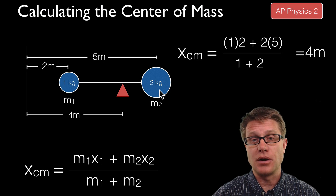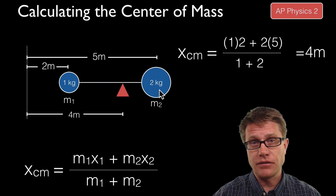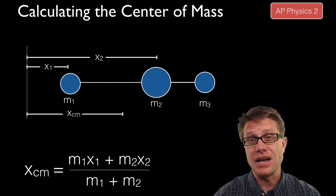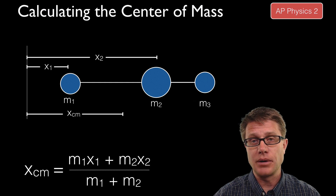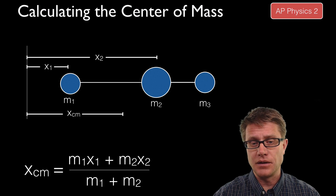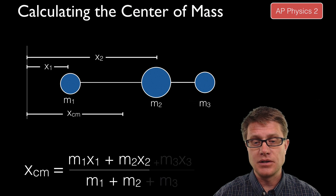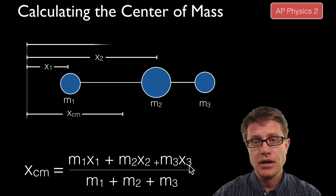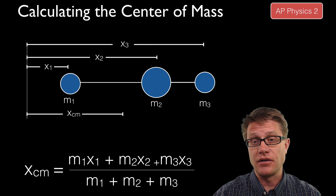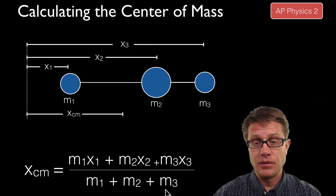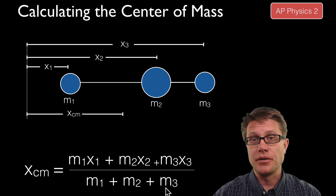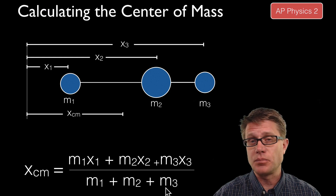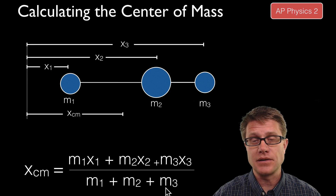That is a pretty easy problem, but different values will make it harder. What if we throw in another mass? Now we have three masses moving in the x axis. All we do is add mass 3 times x3 — where x3 is the distance to the center of mass of mass 3 — and then divide by the sum of all three masses. You could have 12 masses; it is still pretty easy to figure out where that center of mass is.